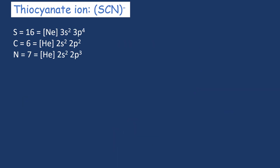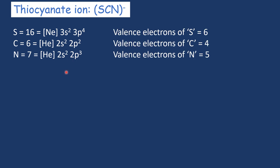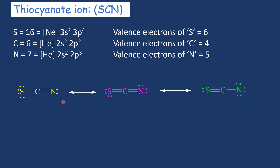One more example: the thiocyanate ion. We have 3 atoms — sulfur, carbon, and nitrogen. Sulfur has atomic number 16, valence configuration 3s2, 3p4, giving 6 valence electrons. Carbon has atomic number 6 with 4 valence electrons. Nitrogen has atomic number 7 with 5 valence electrons. There are 3 possible Lewis dot structures for the thiocyanate ion. I have used a bond representation since we are familiar with valence electron counting. Let us number the structures 1, 2, and 3.